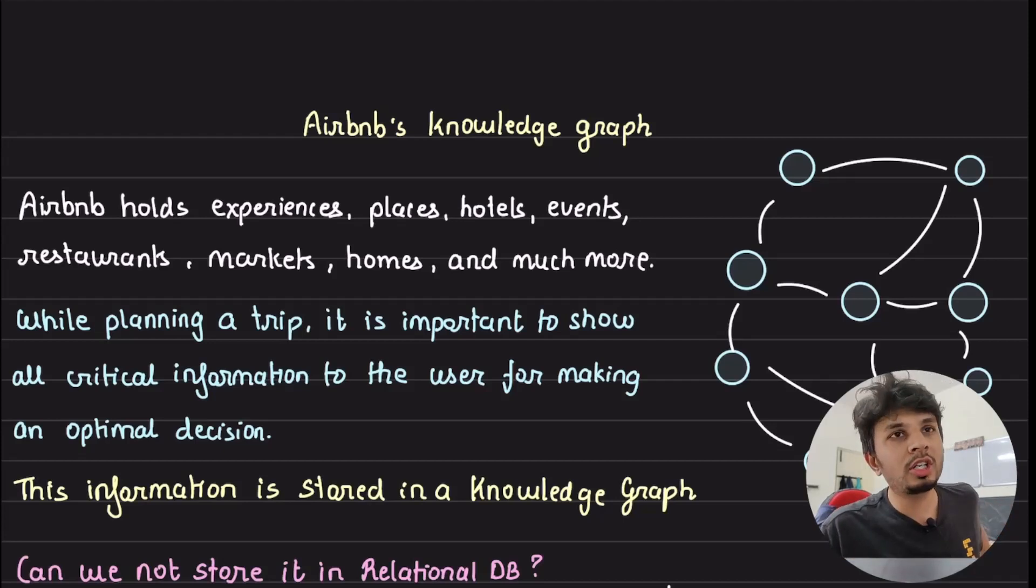When a product is catering to a large audience, providing contextual information becomes important. At the scale of Airbnb, it becomes non-optional. Hence, the engineering team at Airbnb collated all the data and structured it into a knowledge graph that today powers their search, discovery, and trip planner services.